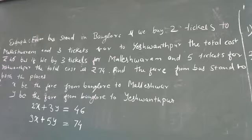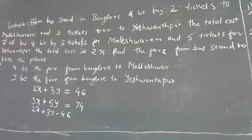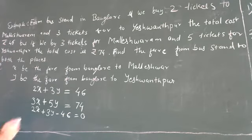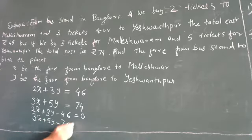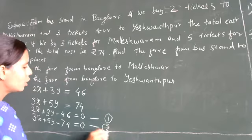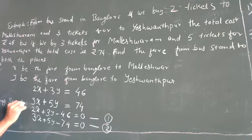Are they in standard form? No. So we have to take them in standard form. It is 2x plus 3y minus 46 is equal to 0, and 3x plus 5y minus 74 is equal to 0. So these equations are equation 1 and equation 2. While writing these equations, you can write: taking standard form for the above equations.